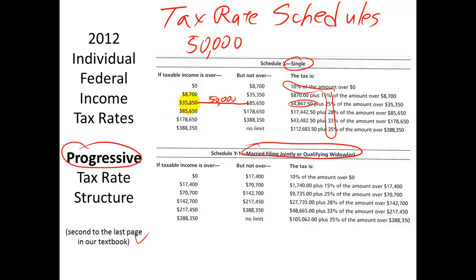Now we only need to calculate the excess of $50,000 over $35,350 — about $14,650 — times 25%, plus the $4,867.50. That would be the total tax on the $50,000. So again, this $50,000, even though you're using the 25% line, is not all taxed at 25%. You still get the benefit of the first layer and the second layer taxed at lower rates. So if you're in the highest bracket at 35%, not everything is taxed at 35% — you get the benefit of the previous five layers taxed at lower rates.